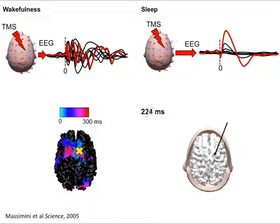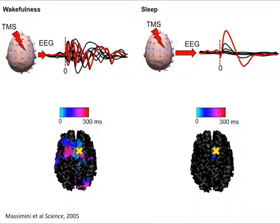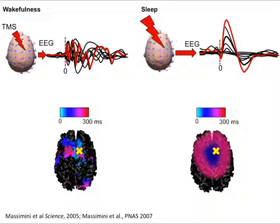One question is whether this breakdown of connectivity is simply due to cortical neurons being hyperpolarized, and whether a stronger pulse could overcome this hyperpolarization and trigger a widespread complex pattern. So we tried stimulating the brain at higher TMS intensity — up to 160% of motor threshold, a real hammer. The best result we could get was a bigger wave and a pattern of activation that is widespread, but very simple: a big slow wave that propagates over the cortex like an oil spot — widespread but homogeneous, with no differentiation.